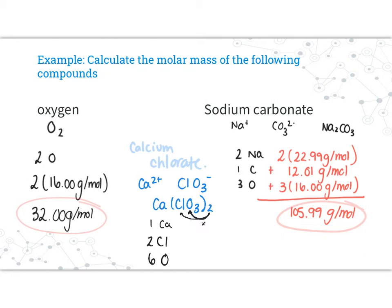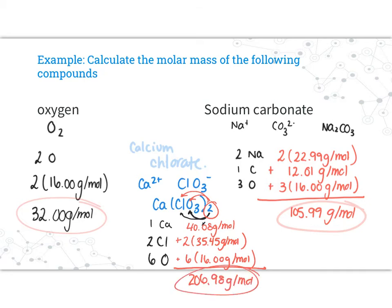Let's add these up. Calcium is 40.08 grams per mole, and there's only one of them. Plus two chlorines at 35.45 grams per mole. And six oxygens at 16 grams per mole. Make sure that you have considered, if there is a bracket around the subscript, that you multiply by the number of each element within. Adding this up, I get something around 206.98 grams per mole.